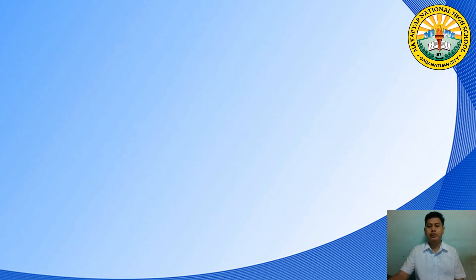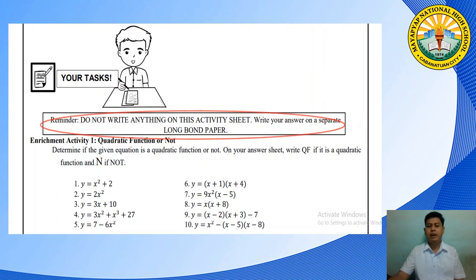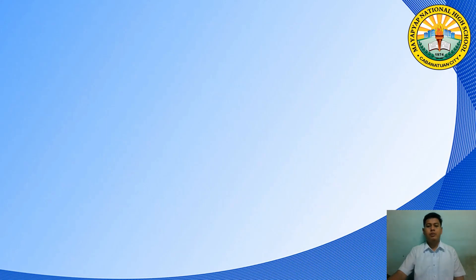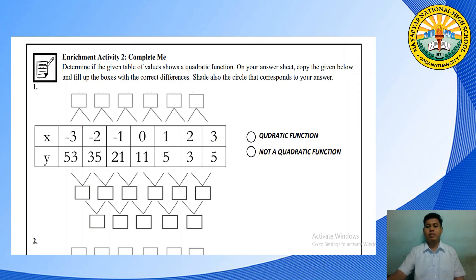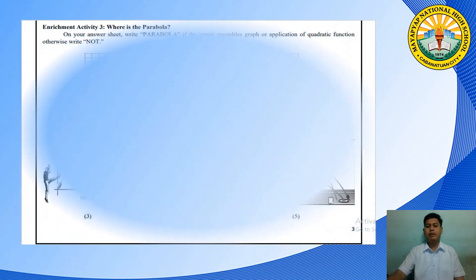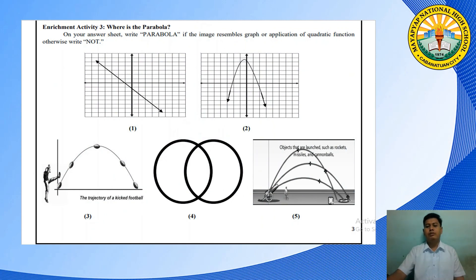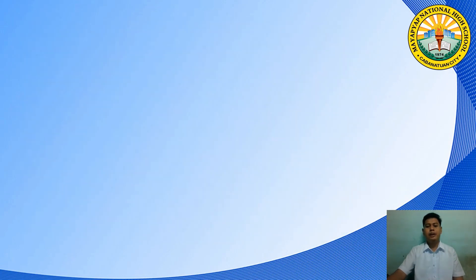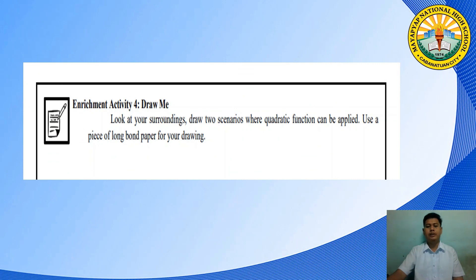At this point, turn your activity sheet to the enrichment part. Reminder: do not write anything on your activity sheet — write your answers on a separate long bond paper. For enrichment activity 1, given 10 equations, determine if each is a quadratic function or not; write QF if it is quadratic function and N if not. For enrichment activity 2, copy the given table of values and fill in the boxes with the correct differences, then determine if it shows a quadratic function. For enrichment activity 3, look at the images and write 'parabola' if the image resembles a graph or application of quadratic function, otherwise write 'not.' For enrichment activity 4, look at your surroundings and draw two scenarios where quadratic function can be applied on a piece of long bond paper.